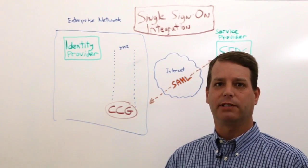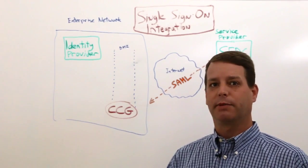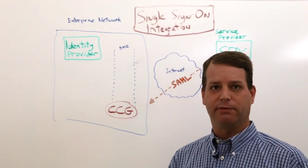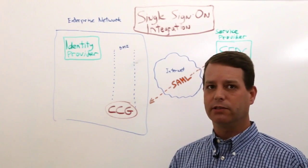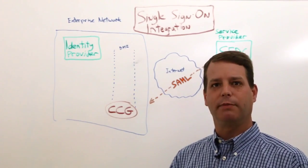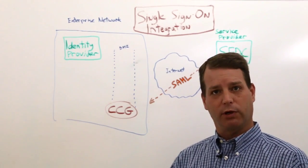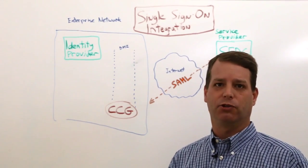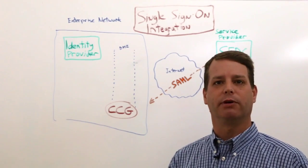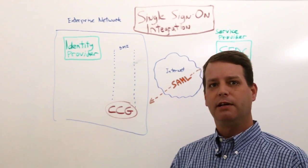It's very common to have a single sign-on product — some kind of federation — in place before we even show up. So the good thing is there's very little impact when we're coming on the scene. You've already got your single sign-on working, with the assertion configured with the attributes going to and from the identity provider and the service provider.